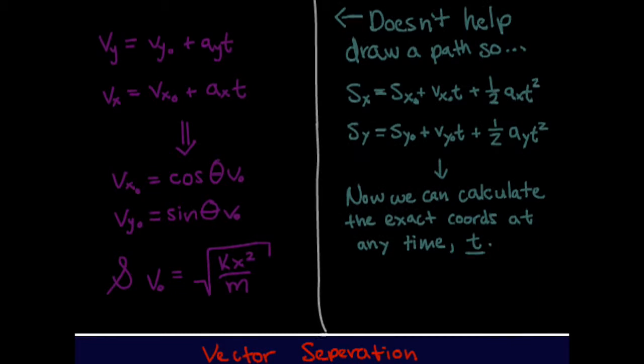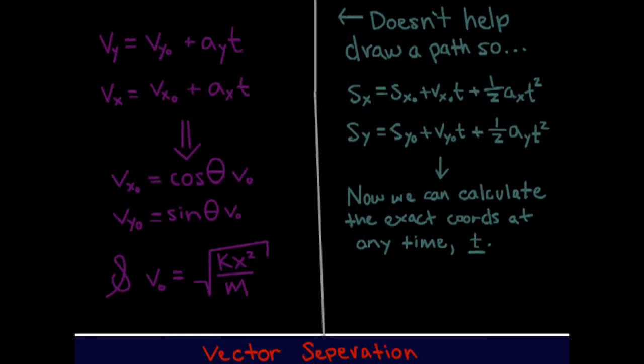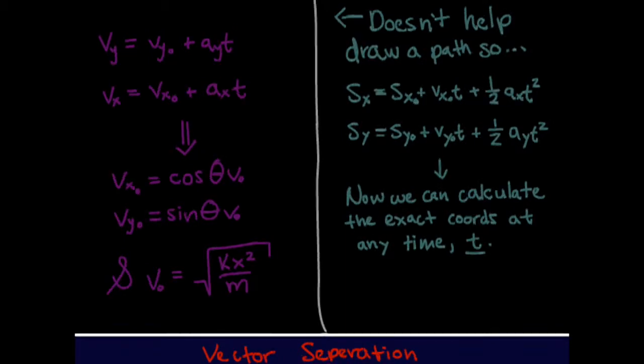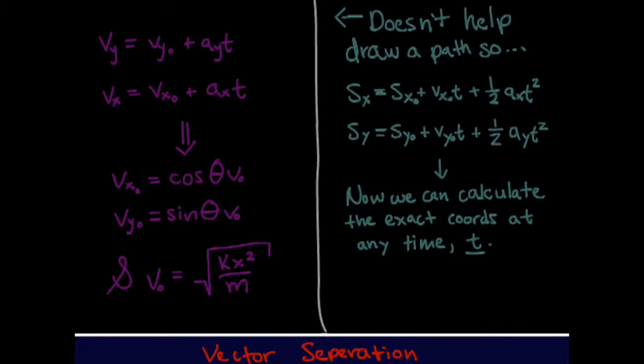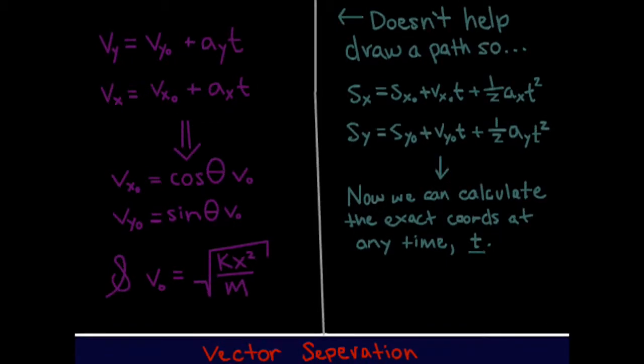The left part doesn't exactly help draw a path, so in order to do that we have to first use our position equations that we've formulated and find the time in which the object hits the ground, aka when the y position is zero. By doing that we can find the time that it hits and then find the x.